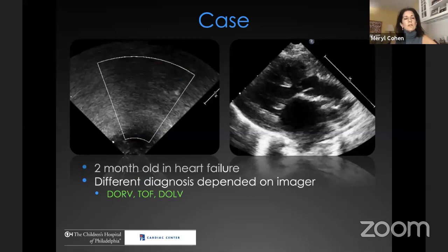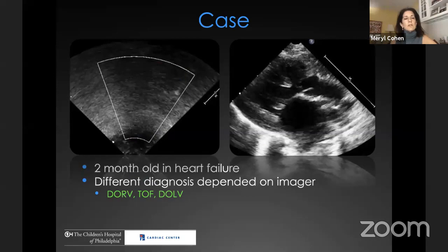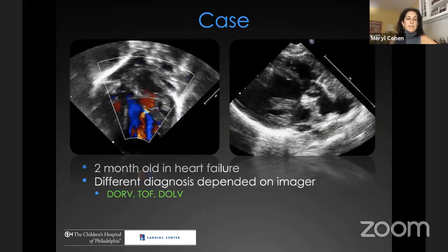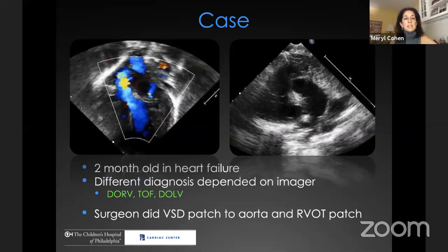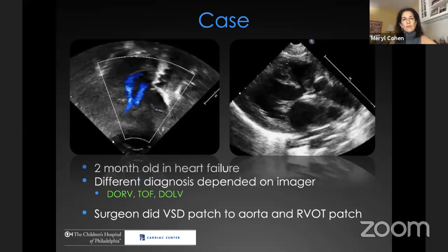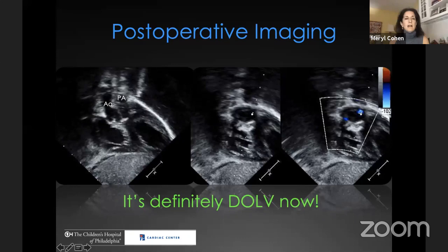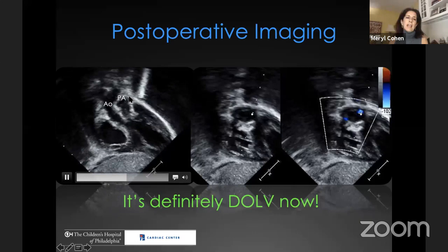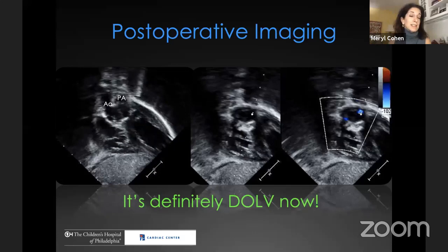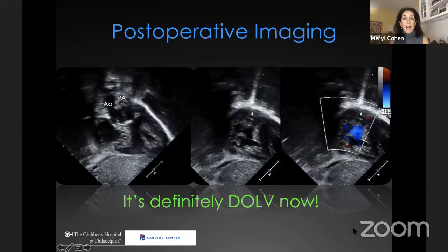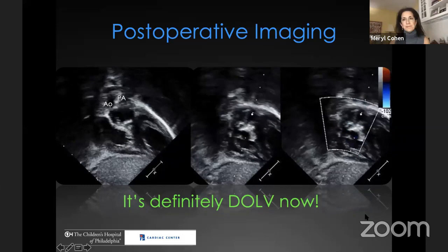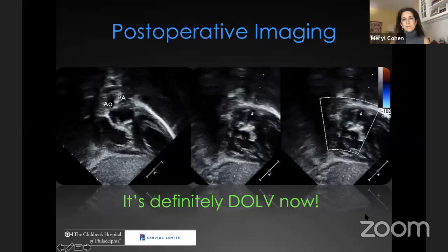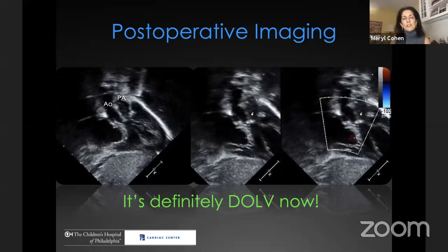When the patient arrived, the diagnosis was double outlet right ventricle; someone called it tetralogy of Fallot, others called it double outlet left ventricle. The surgeon, without additional imaging, performed a VSD patch to the aorta and a right ventricular outflow tract patch — treating it similar to tetralogy of Fallot. The result was that the VSD patch now included both the aorta and pulmonary artery on the LV side, creating double outlet left ventricle. The patient survived only because two residual VSDs around the patch allowed blood into the pulmonary artery.